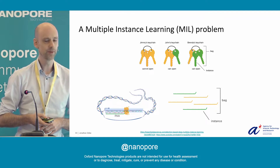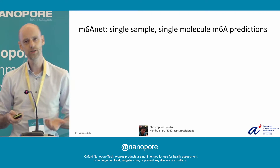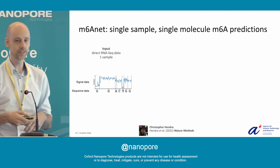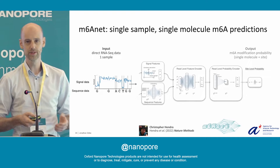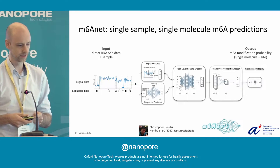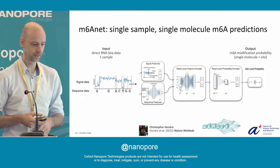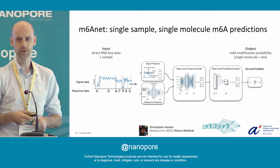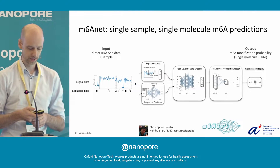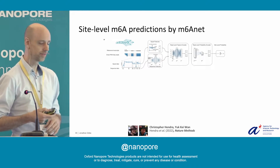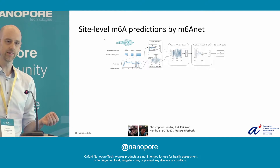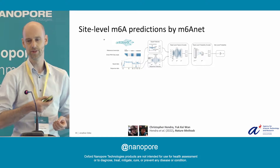So what we did is implement a method called M6ANet that uses this multiple instance learning framework to identify M6A modifications. Very briefly, this works by using the signal data and the sequence data, which is first mapped into a higher dimensional space. That space is used to represent each read in 20 dimensions. A second encoder layer then maps those dimensions back to individual read-level modification probabilities. The final step calculates a site-level probability. The beautiful thing is that we can learn all of that end to end — the only thing we need to know is the site-level probability, but implicitly we learn a probability for each read that it is modified.